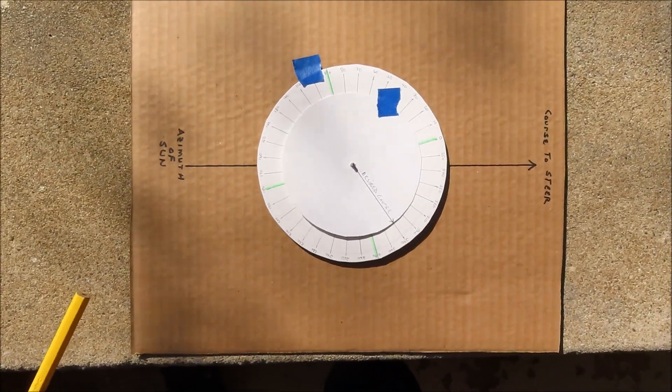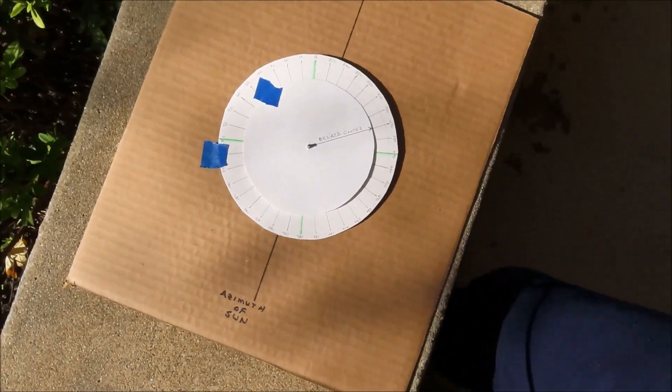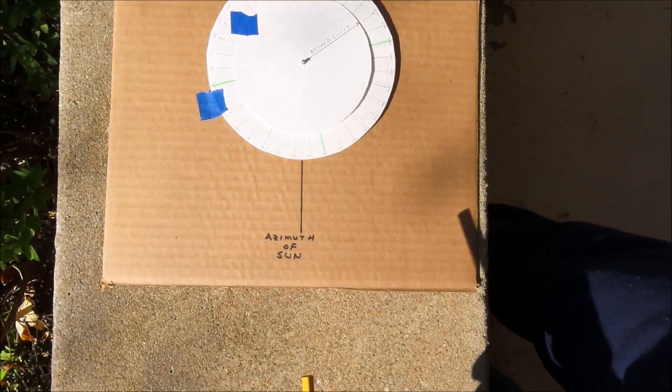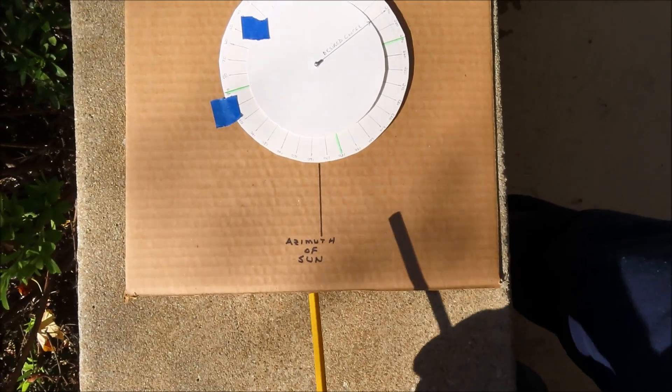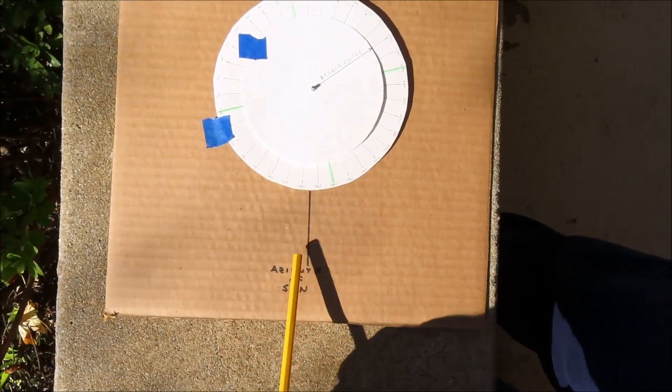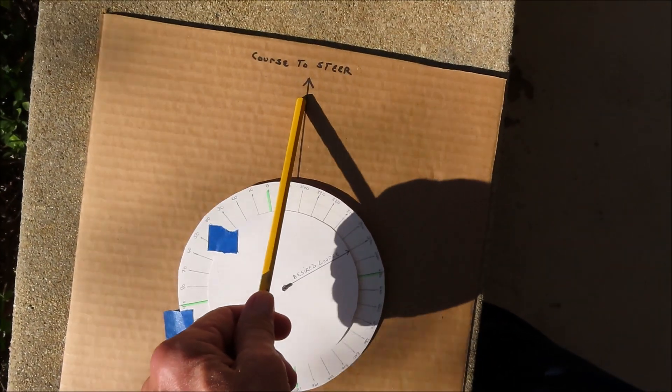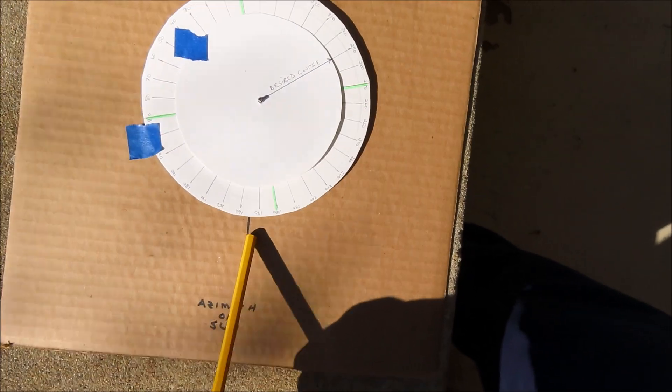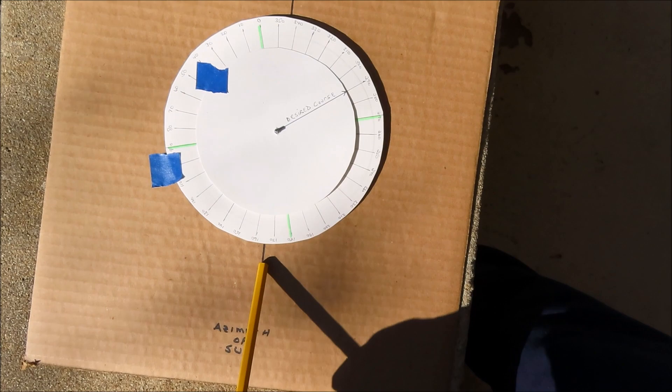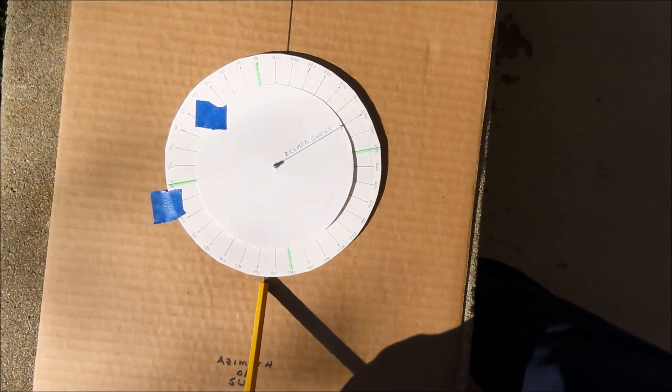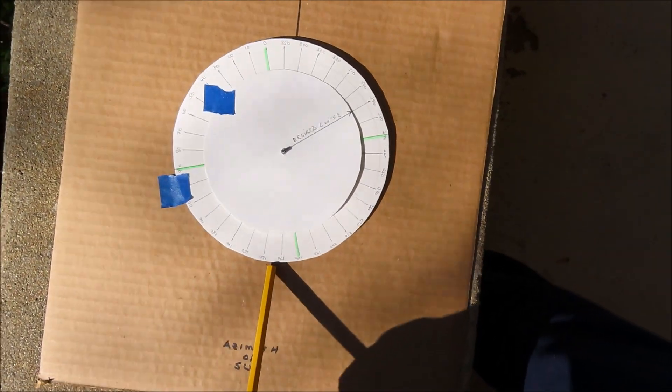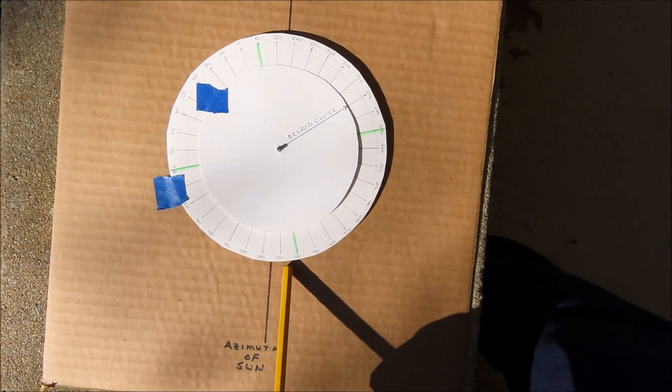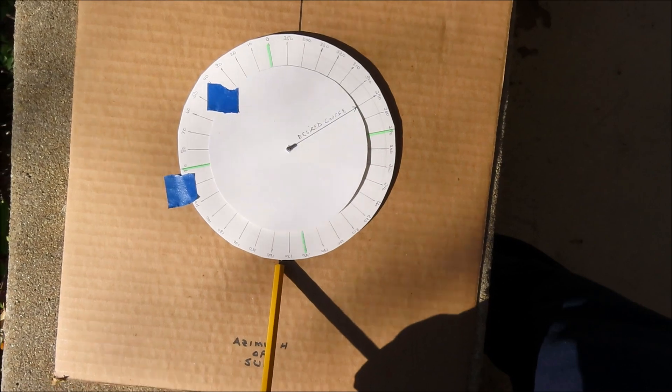So you have to visualize that this would be mounted on the hood of a vehicle. This would be the back of the vehicle. Here's the front of the vehicle. It's noon here at my location. And the azimuth of the sun right now is 164 degrees. So there's 160. There's 170. I have it taped at 164.